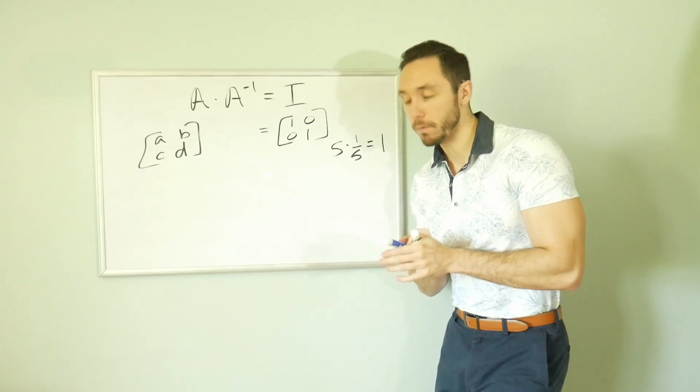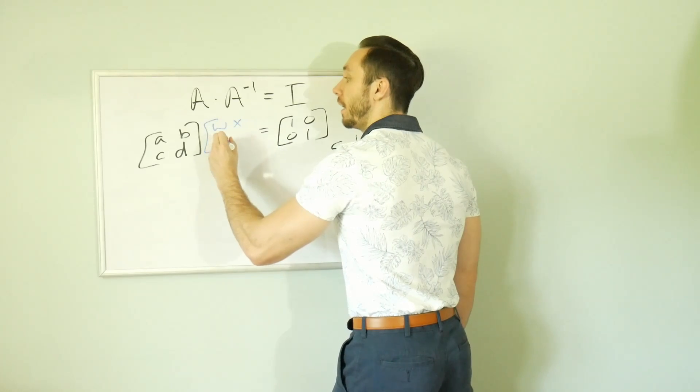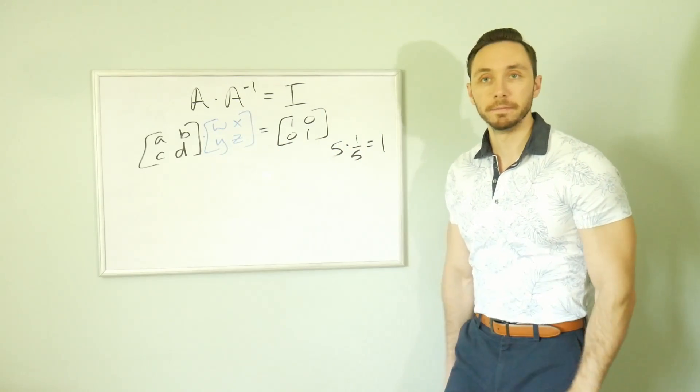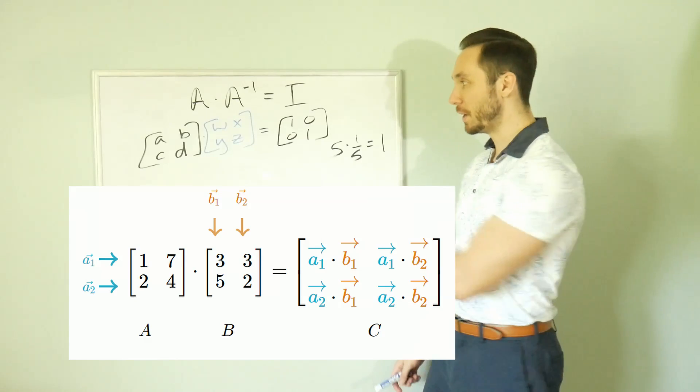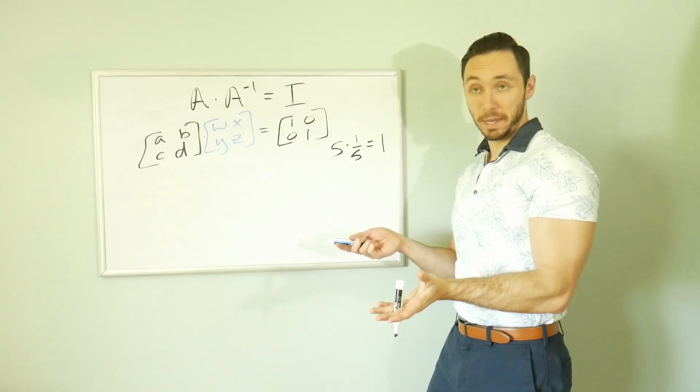So we better know what A inverse is in regards to those letters, A, B, C, and D. For now, we don't know what it is. So we'll just call it W, X, Y, and Z. And we'll solve for these things. How do we do that?